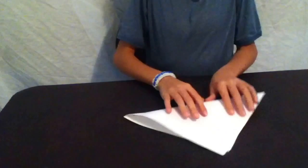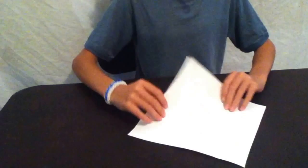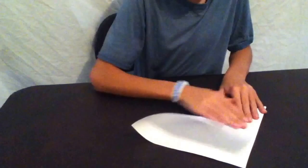So first you're going to fold it like a triangle, like that. Make sure it's a square piece of paper. And then do it again on the other side. Another triangle, it doesn't have to be perfect.